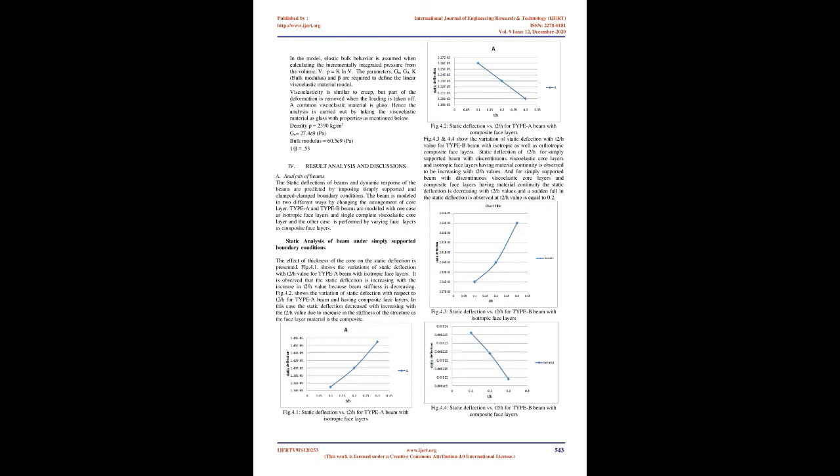Type B beam: a sandwich beam of 1 m length, 0.05 m wide and 0.1 m height is modeled in ANSYS software using 8-node brick element Solid 185. The thickness of the core layer is varied as per the T2/H ratio of Type A beam, and through calculations to maintain the same volume of core layer K2, where K2 is the viscoelastic layer thickness of Type B beam and H is the total height of the beam.